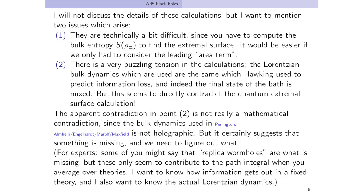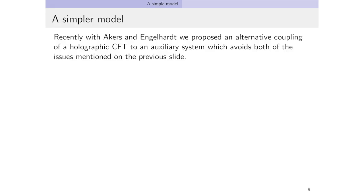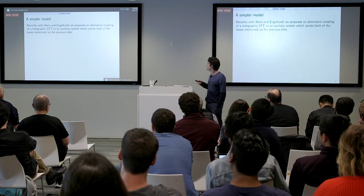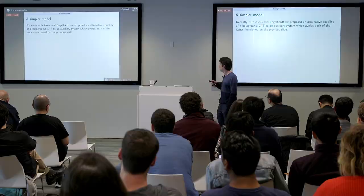An aside for the experts: some of you might say that replica wormholes are the thing that's missing. But those only seem to contribute to the path integral when you average over theories, and I want to know how information gets out in a fixed theory and what the actual Lorentzian dynamics are. Recently, with Netta and Chris, we proposed an alternative coupling of a holographic CFT to an auxiliary system which avoids both of these issues. That's what I want to tell you about now.